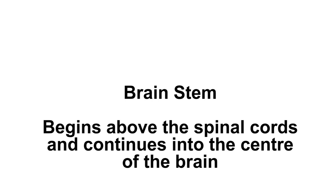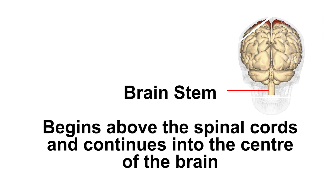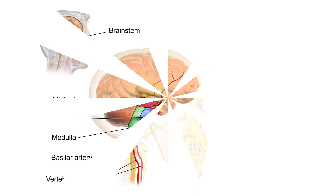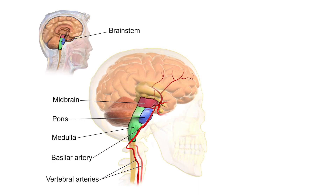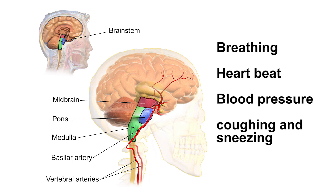We will start from the brain stem. The brain stem is the portion of the brain that just begins above the spinal cord and continues into the center of the brain. Where the spinal cord enters the brain, two important structures — medulla and pons — are located. The medulla regulates vital body functions such as breathing, heartbeat, blood pressure, as well as coughing and sneezing.